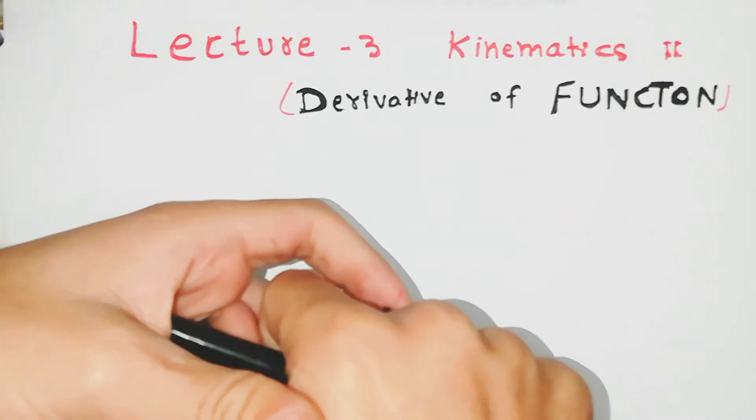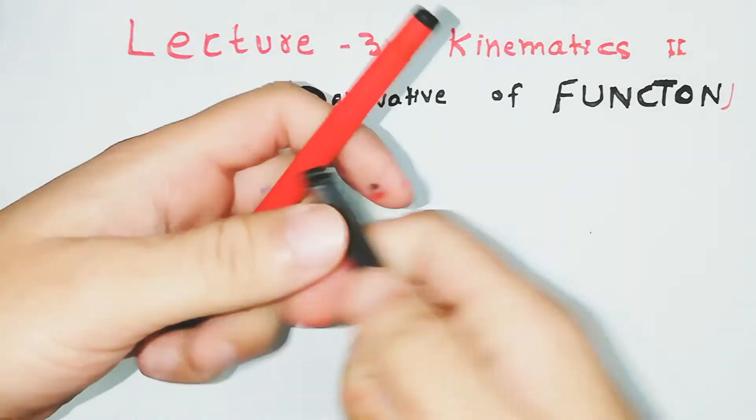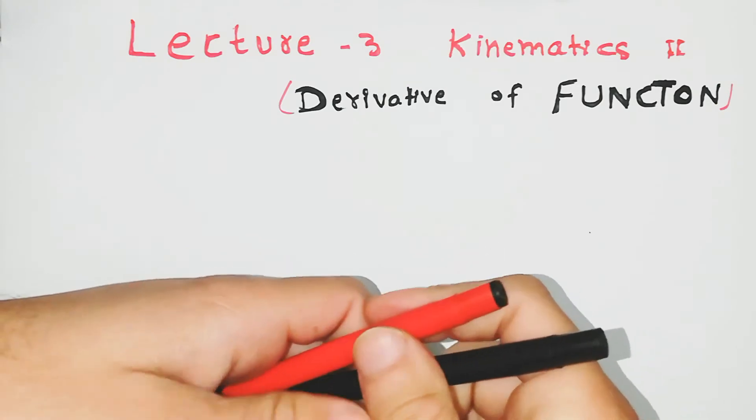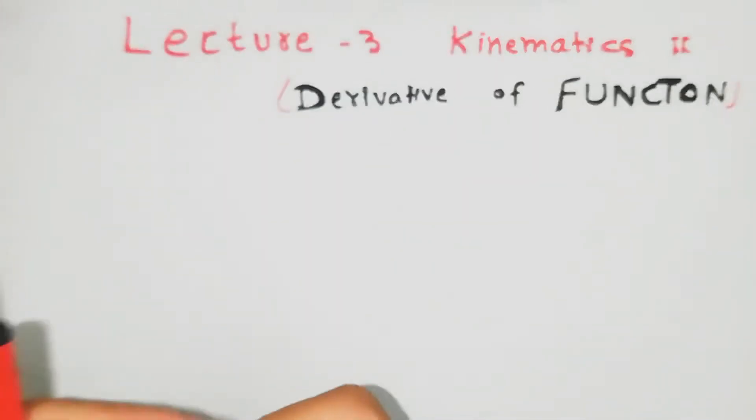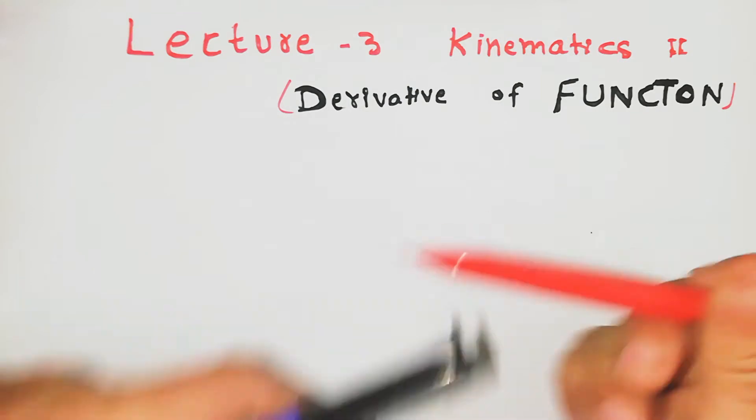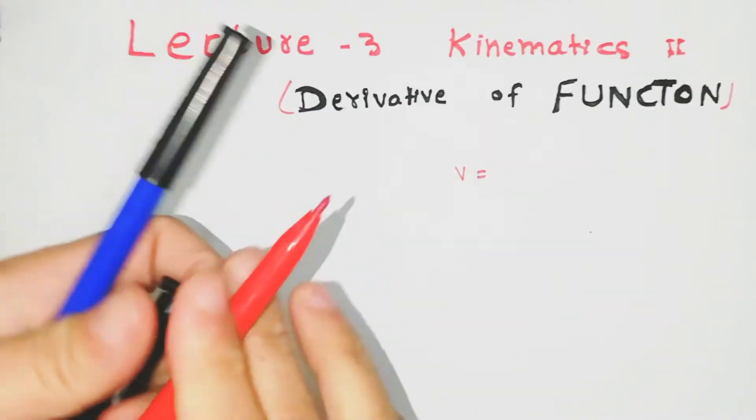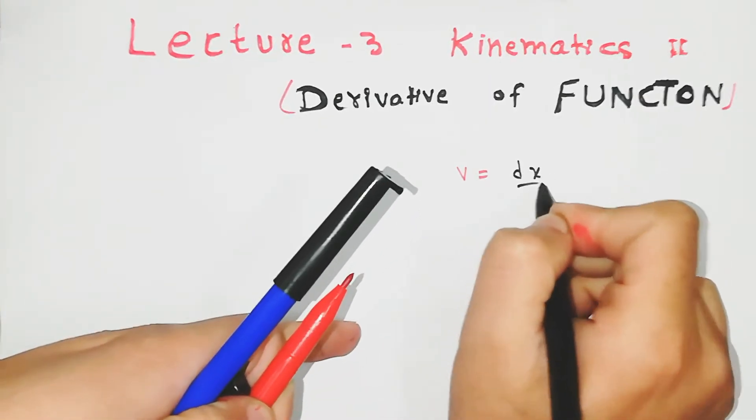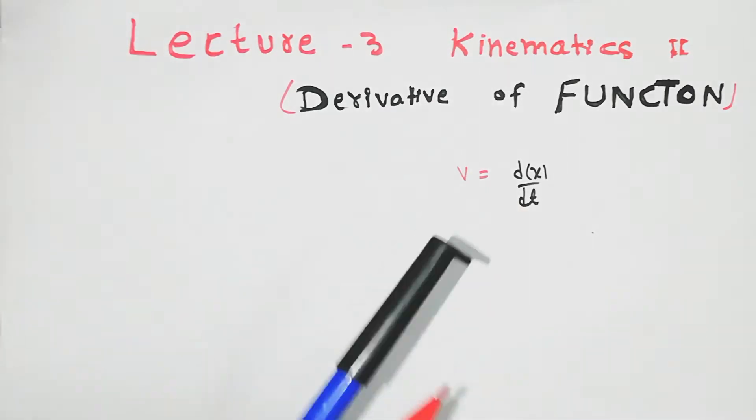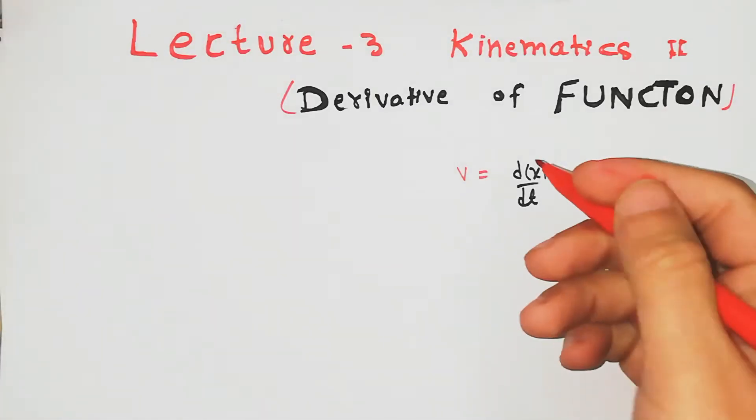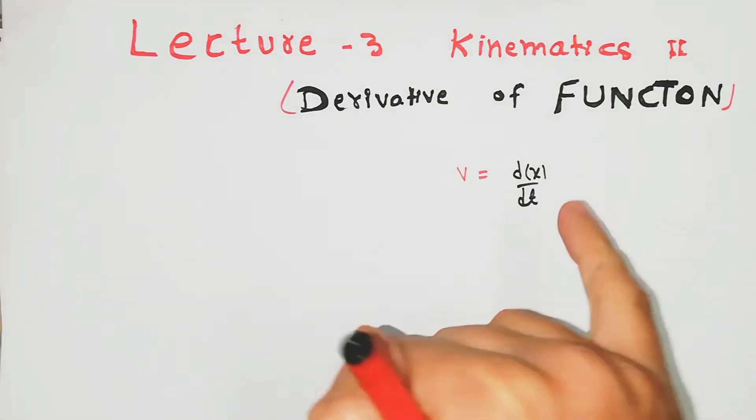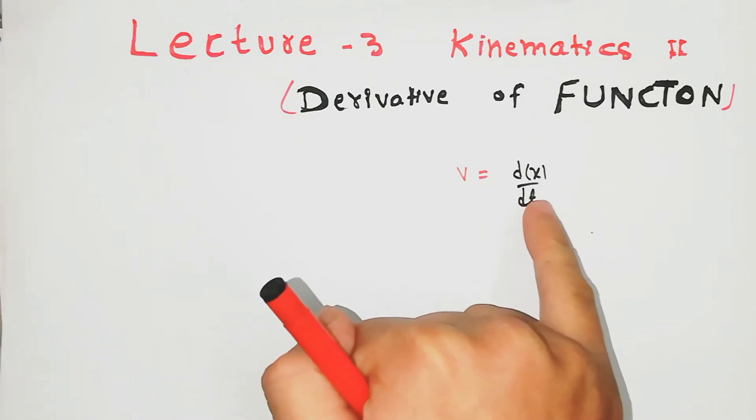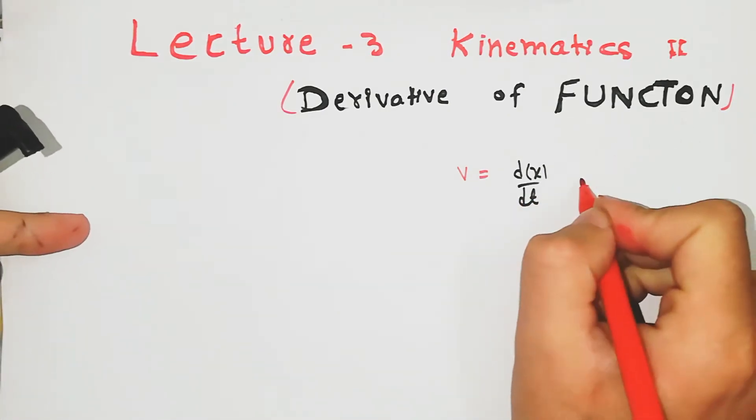Let's suppose from last lecture we defined velocity. Velocity, we have defined that v is equal to dx over dt. Here we have the argument x as the derivative function. When we have the derivative of position or distance, then it will become the velocity.